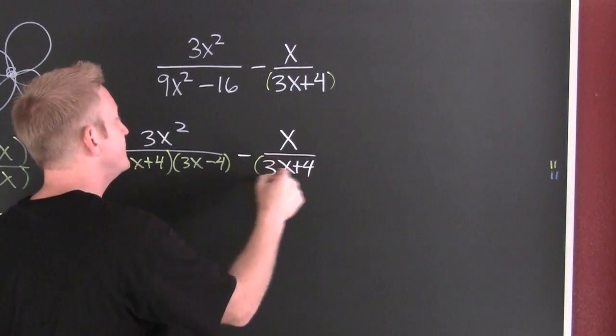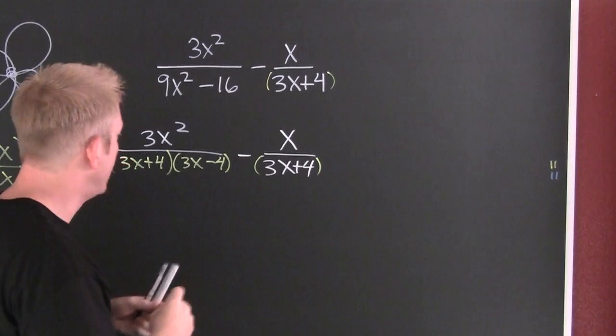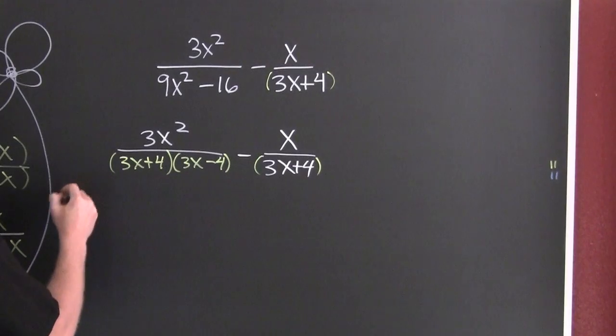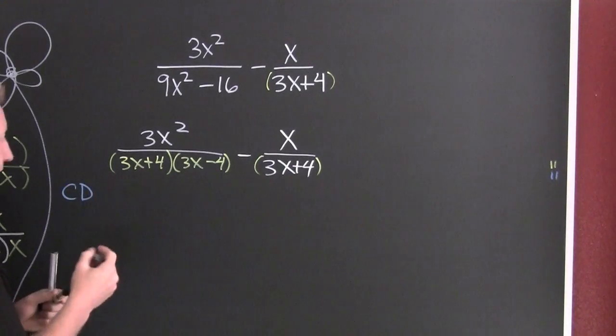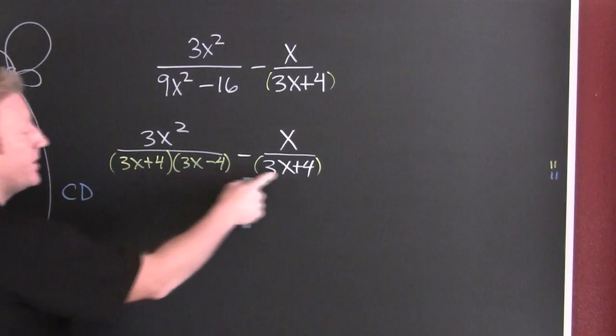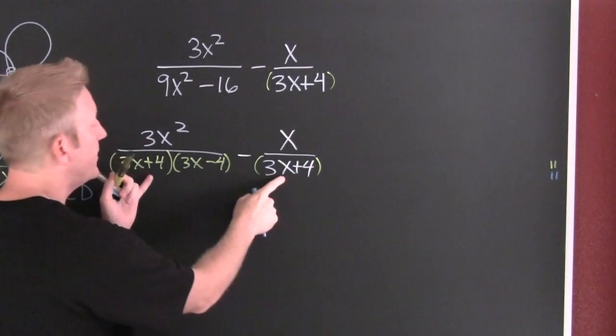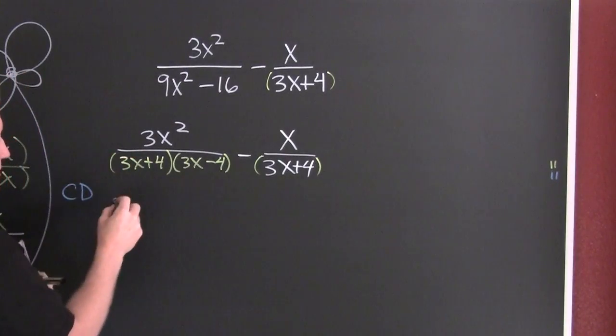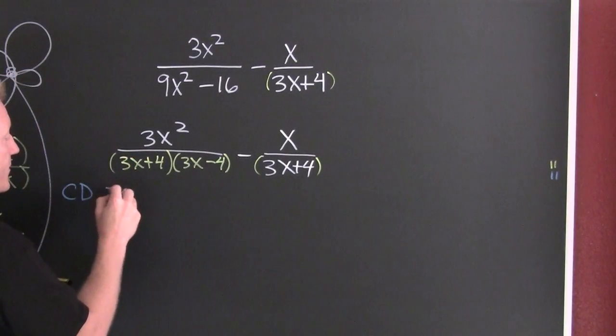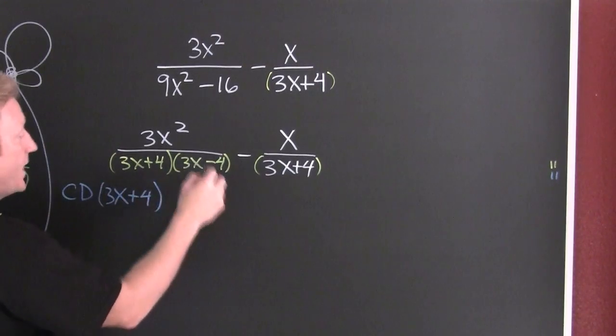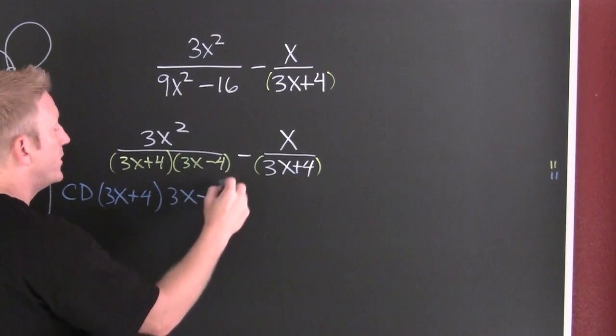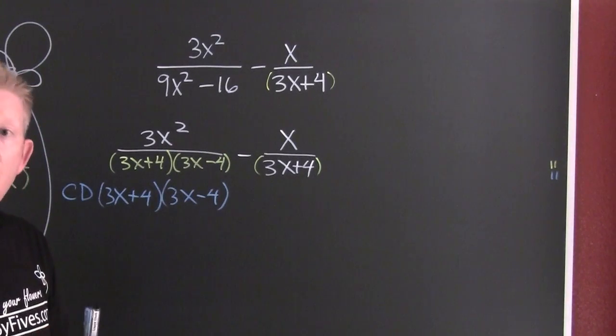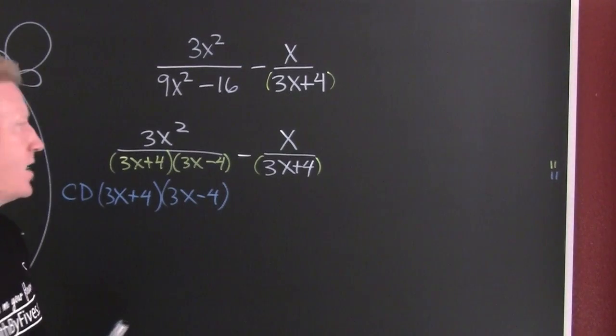Now that I have my factorization I can find my common denominator. And what would a common denominator be if you had one? Here we see we have two factors in this denominator and one factor in that denominator. A common denominator is gonna have that additional factor. So here are my common denominators: 3x plus 4 times 3x minus 4.